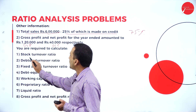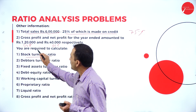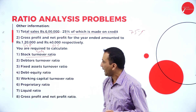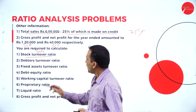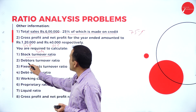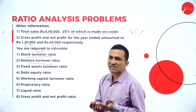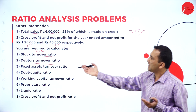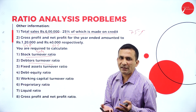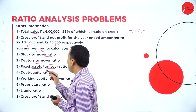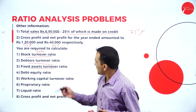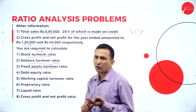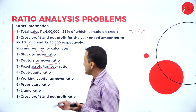You are required to calculate: stock turnover ratio — turnover always relates to sales; debtor turnover ratio — debtors arise from credit sales; fixed asset turnover ratio — again based on sales; and debt-equity ratio — debt is long-term loan, such as 12% debenture or 9% debenture.